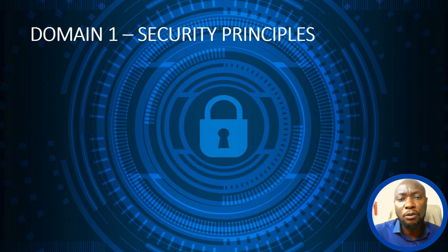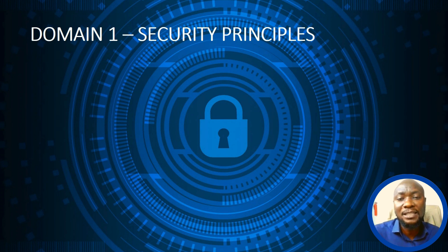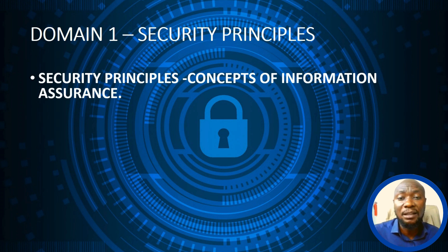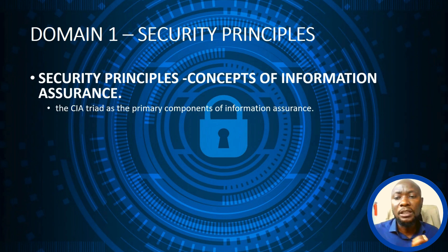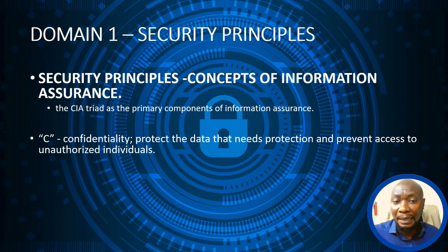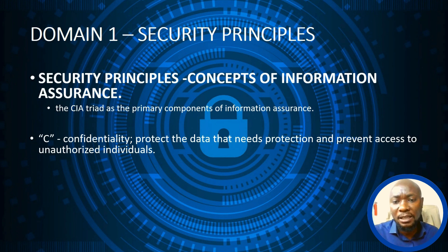Under Domain One — Security Principles — the first concept discussed is information assurance. Information assurance is described by what we call the CIA Triad, which represents the primary components of information assurance. The C in the CIA Triad stands for Confidentiality, which talks about protecting data that needs protection and preventing access by unauthorized individuals.